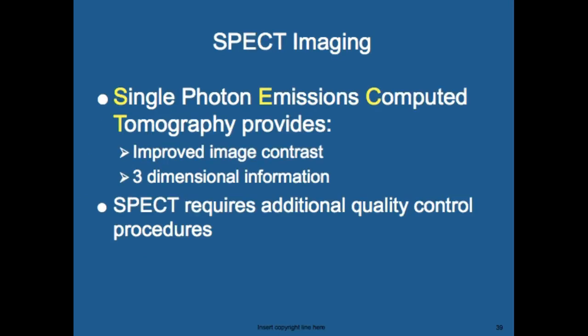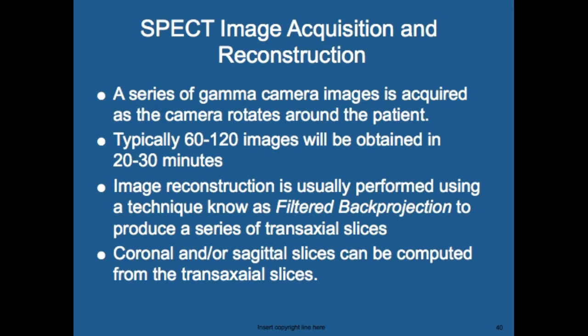SPECT — single photon emission computed tomography — provides improved image contrast and three-dimensional information. It requires additional quality control procedures and is a specialty scanner. A series of gamma camera images is acquired as the camera rotates around the patient; typically 60 to 120 images are obtained in 20 to 30 minutes. Image reconstruction uses filtered back projection to produce transaxial slices, and coronal and/or sagittal slices can be computed — similar to CT reformatting.